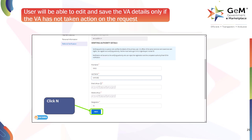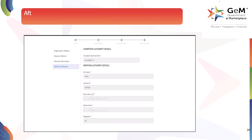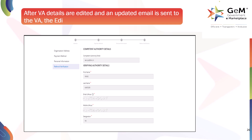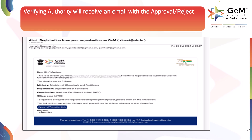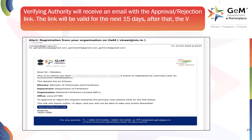Click Next after making the changes. After VA details are edited and an updated email is sent to the VA, the edit button will no longer be available. The verifying authority will receive an email with the approval or rejection link. The link will be valid for the next 15 days. After that, the VA will not be able to take any action.